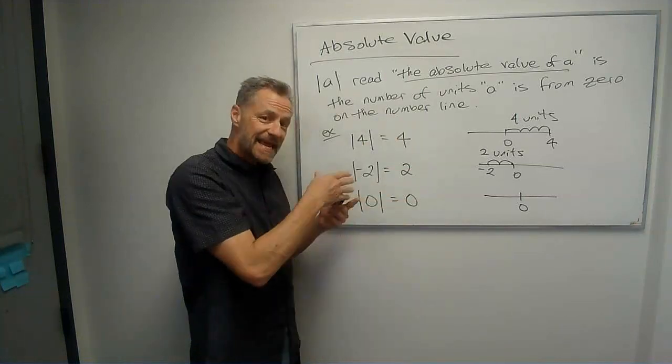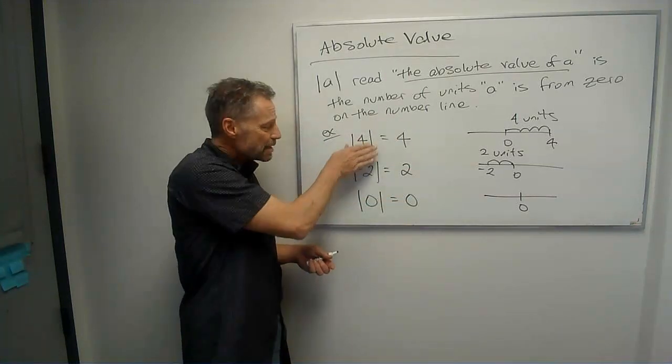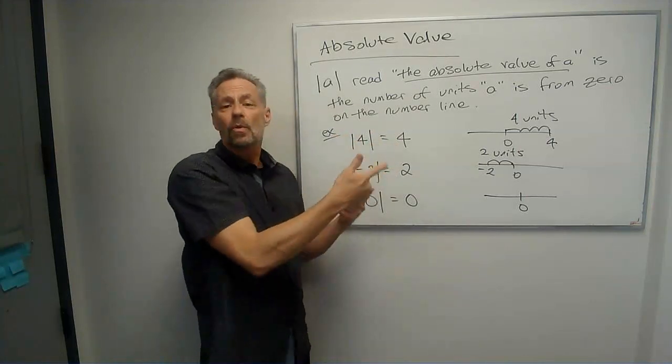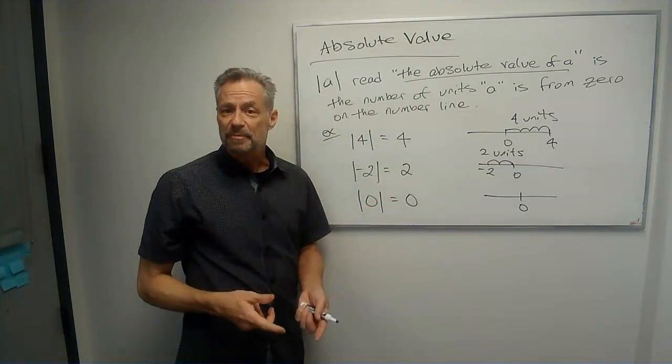So notice, any time we take an absolute value, the absolute value itself is just going to be a positive number, or in the case of zero, it's just going to be zero.